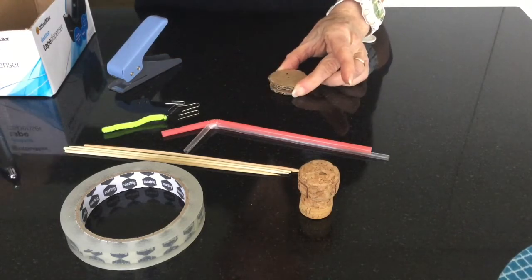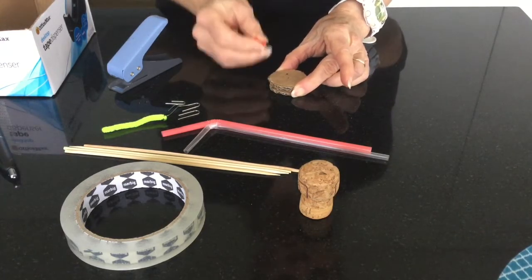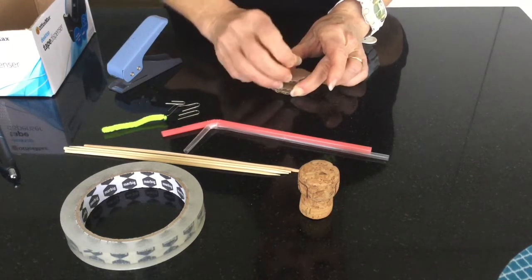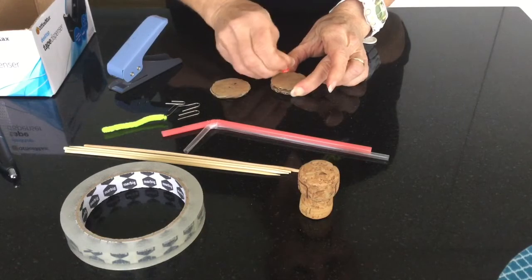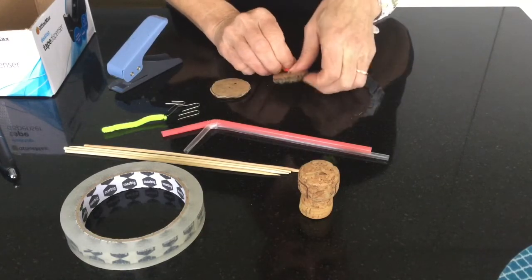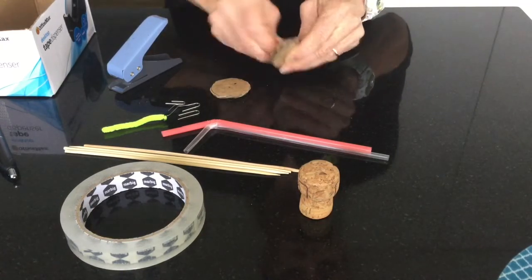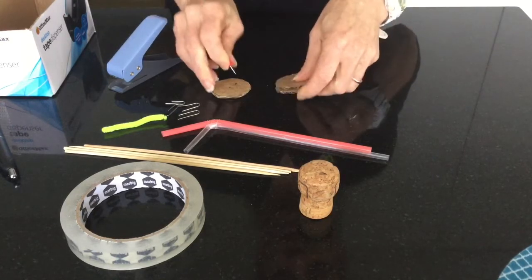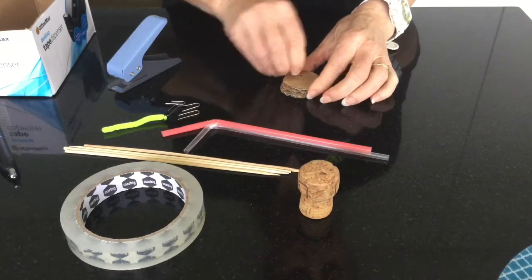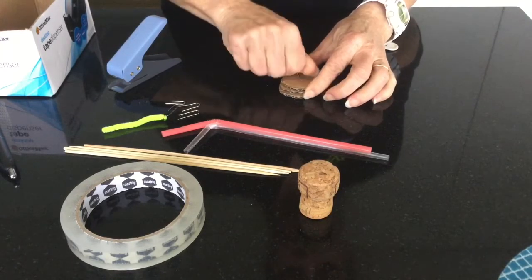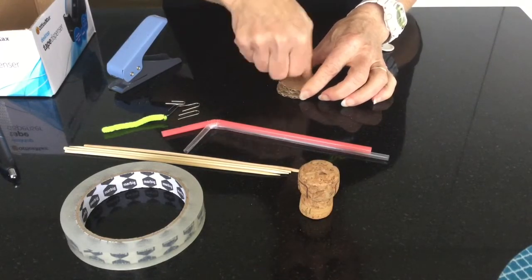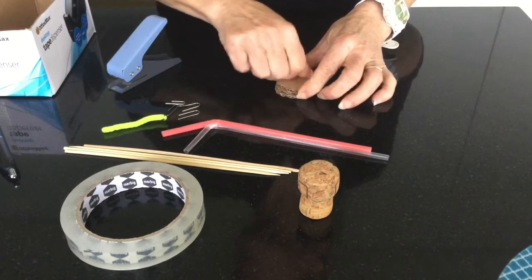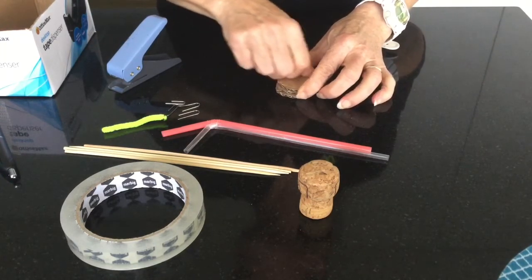And we need to put some holes through that. You might need an adult to help. I'm using a push pin here. If that isn't large enough for our skewer to go through, we can make that a little bit larger with a cooking skewer. Just make a hole there.